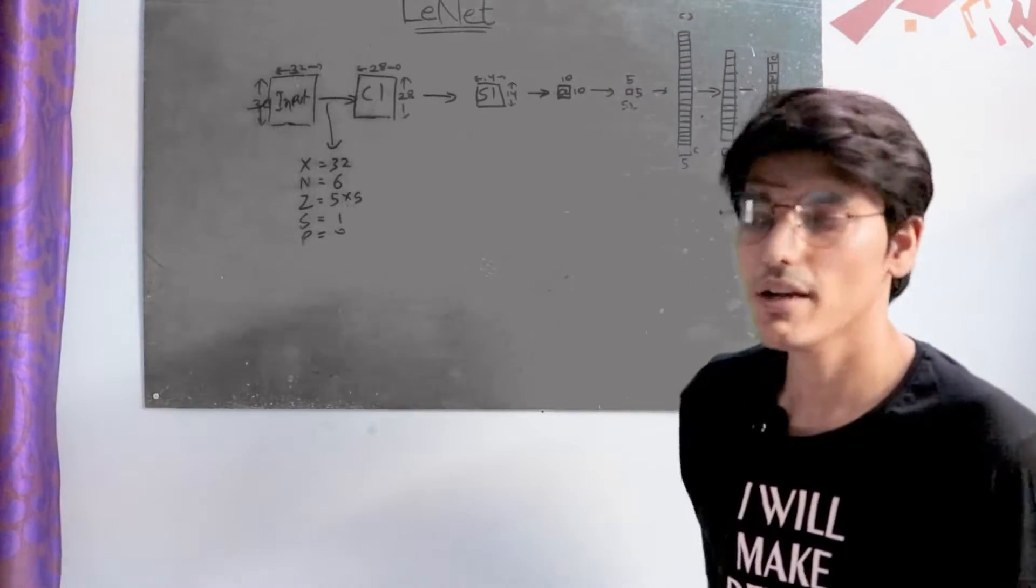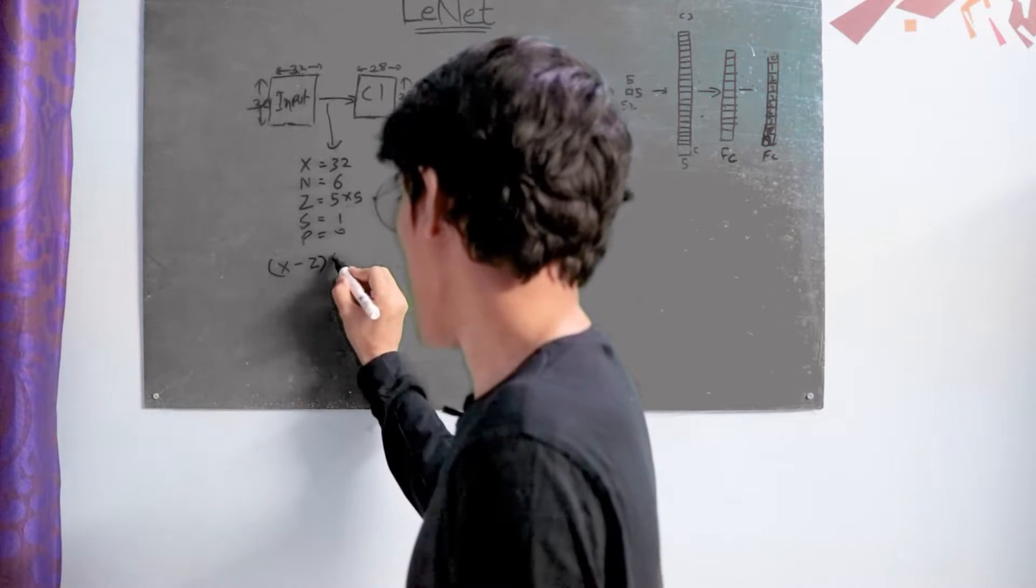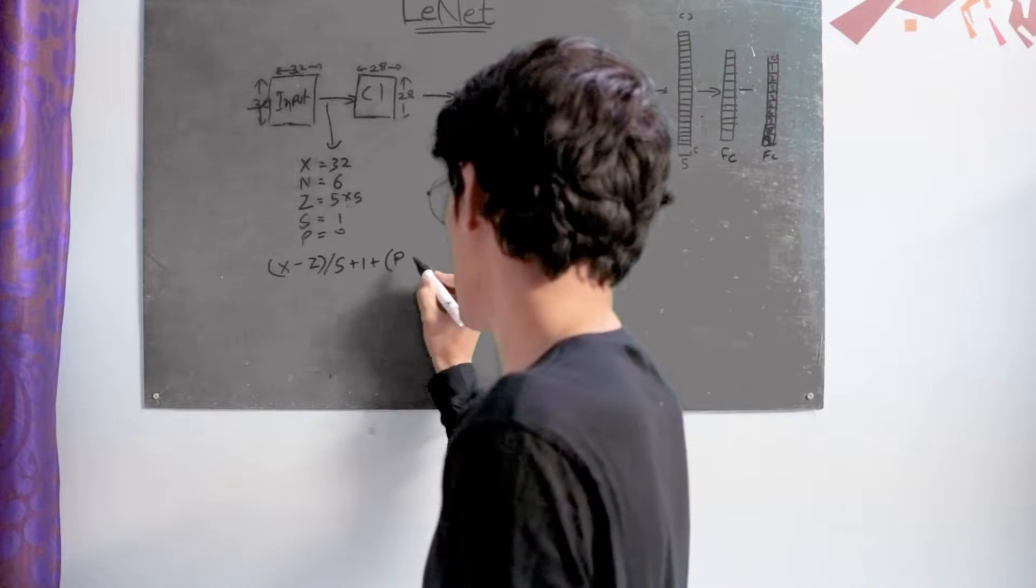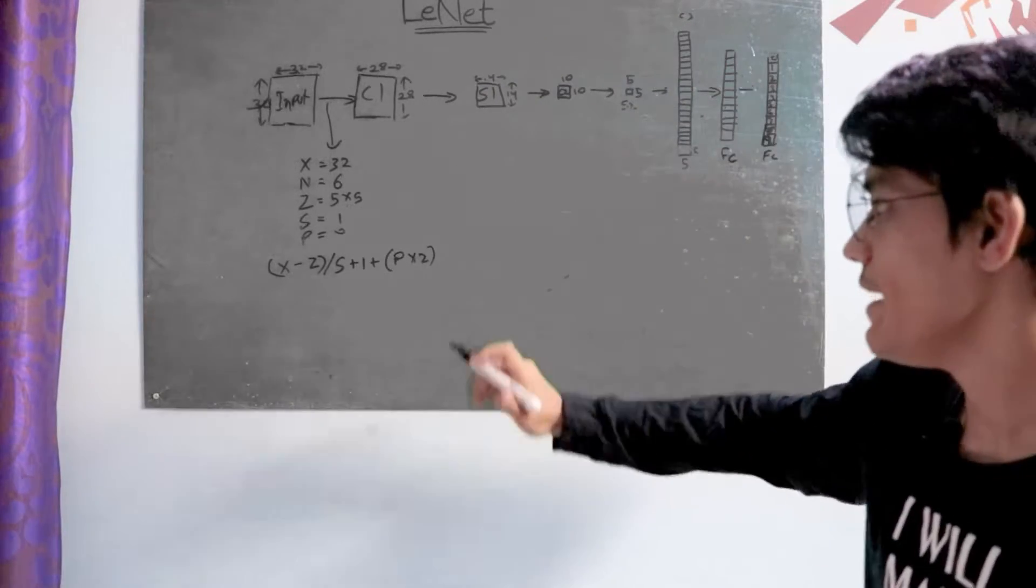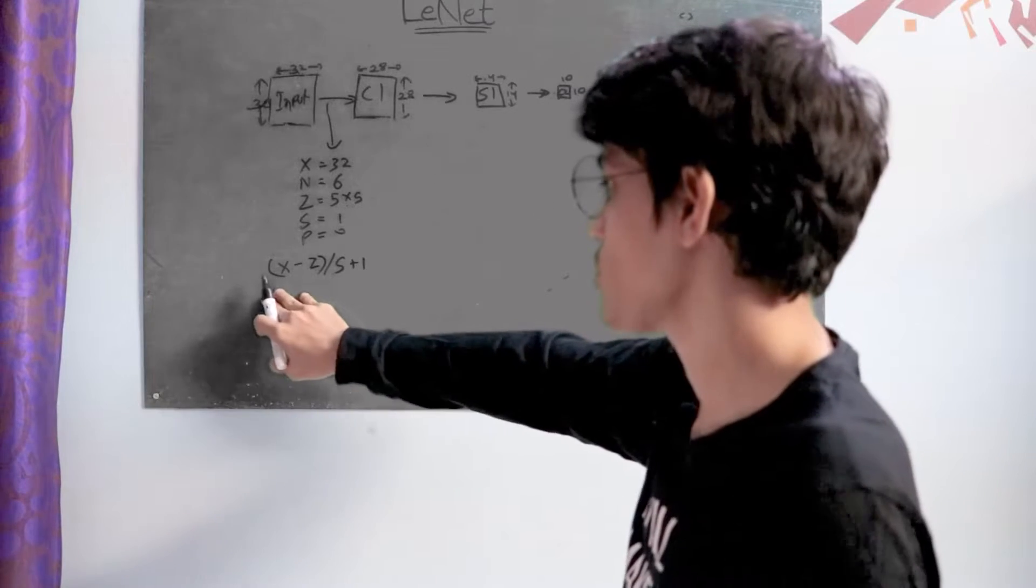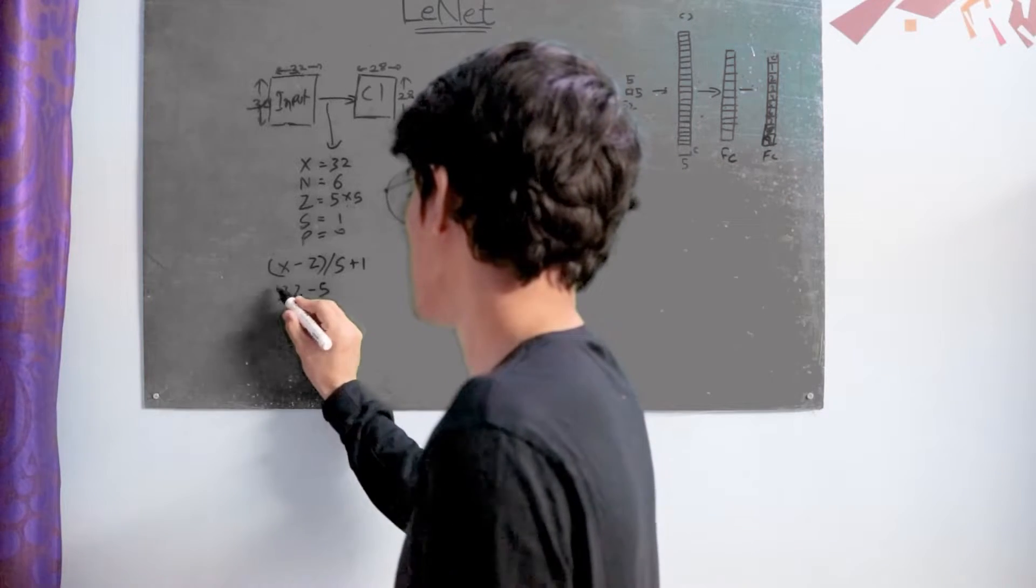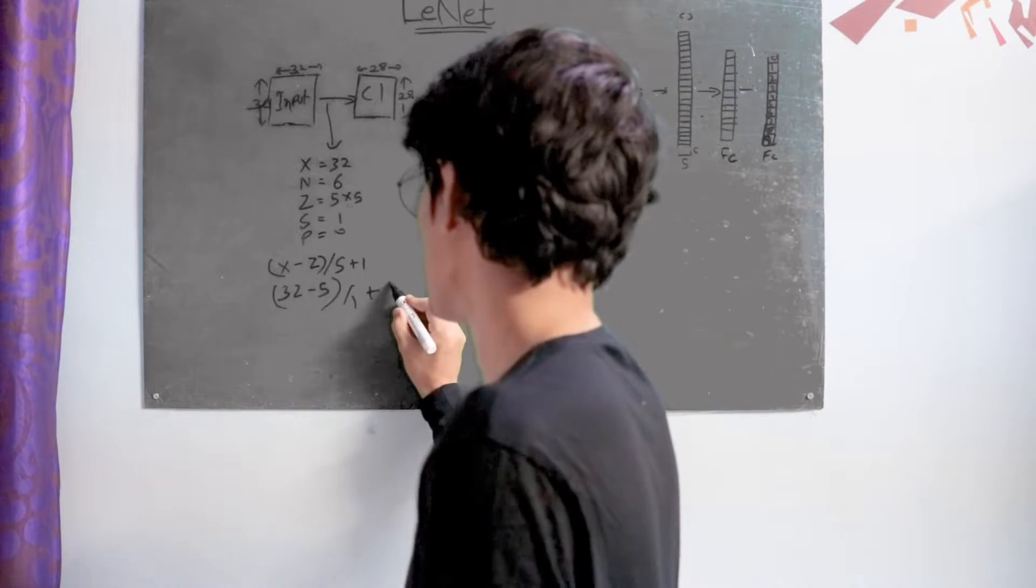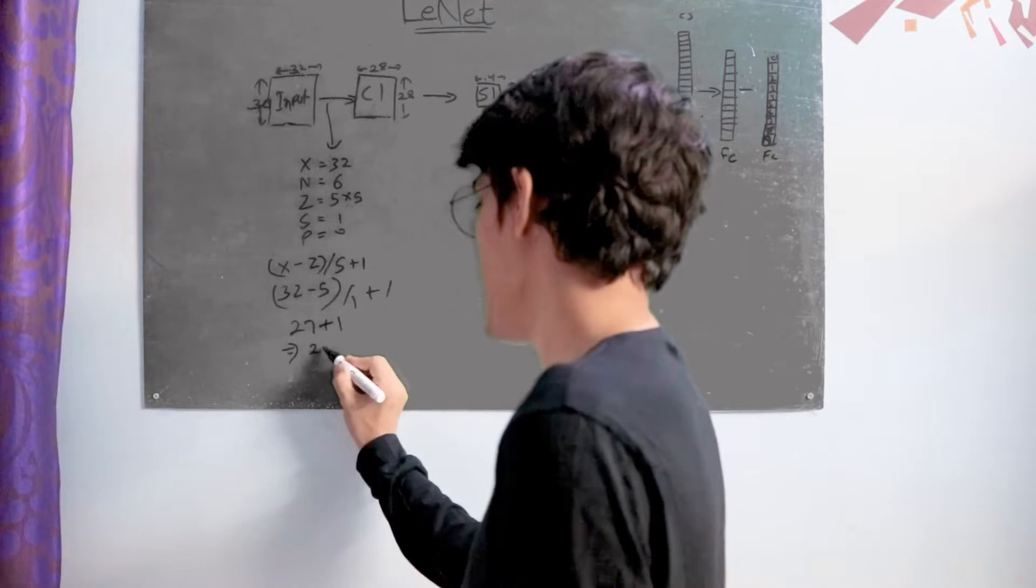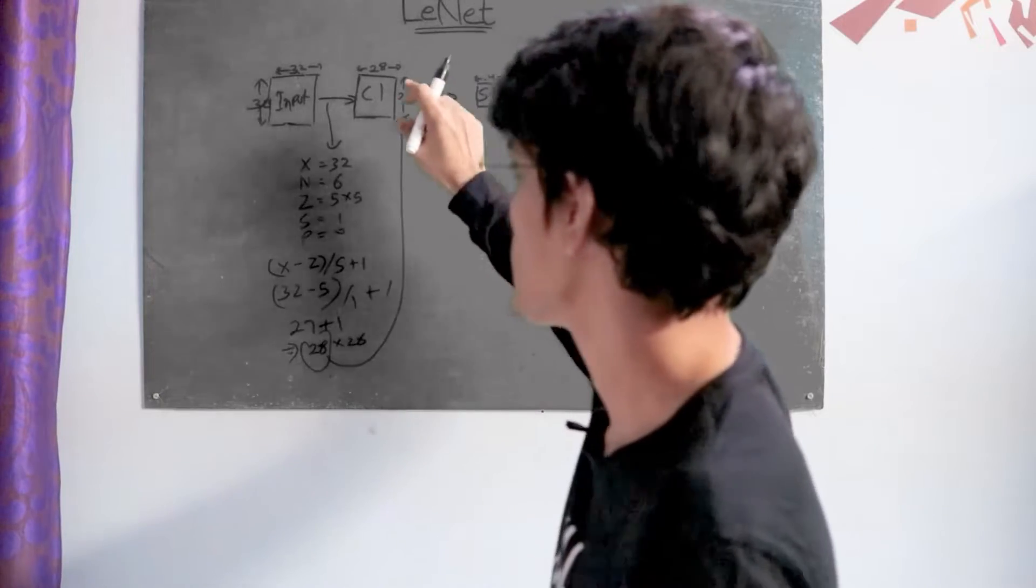The formula for current input is (x - z) / stride + 1 + (padding × 2). We don't use padding here, so we don't need this part. By putting all values in this formula we get (32 - 5) / 1 + 1. We get 27 + 1 which equals a 28 x 28 matrix. This gives us our first current input.